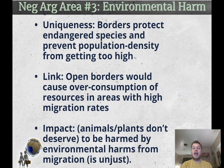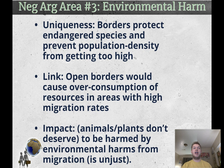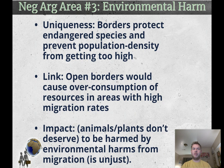Third is environmental harm. Borders right now protect endangered species and prevent population density from getting too high. If people can only enter in controlled, limited ways, you can keep border land protected environmentally and prevent certain ecosystems from getting overcrowded. Open borders would cause overconsumption of resources in areas with high migration rates, and would likely disrupt the environment along the border in places that become more open. The impact: animals, plants, the environment in general, and people too don't deserve to be harmed by environmental problems caused by unmanaged migration.